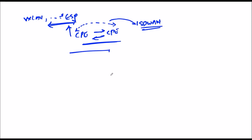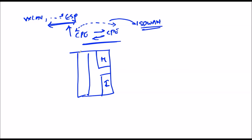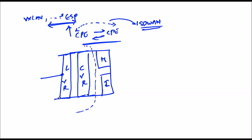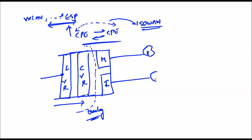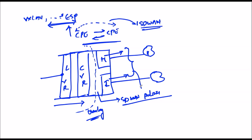When it comes to underlay connectivity, let's say this is my MPLS and this is my internet. We have a control VR and a LAN VR. The control VR establishes tunnels and the LAN VR uses the tunnels to forward traffic. Once the next hop is decided, the LAN VR constructs the overlay header. Which underlay to use - MPLS or internet - is decided with the help of SD-WAN policies.